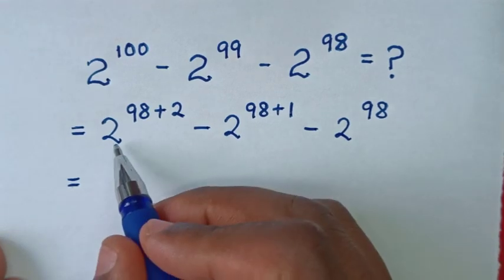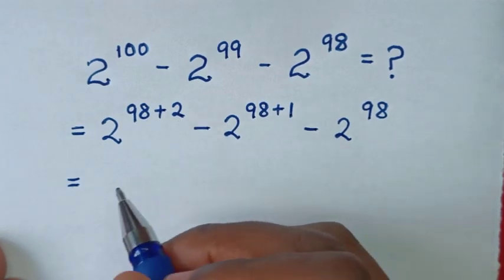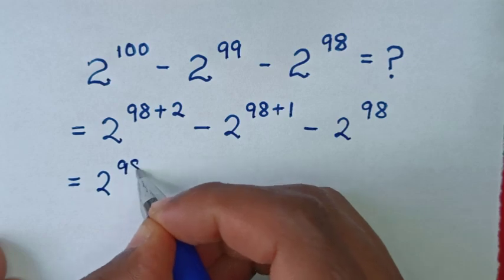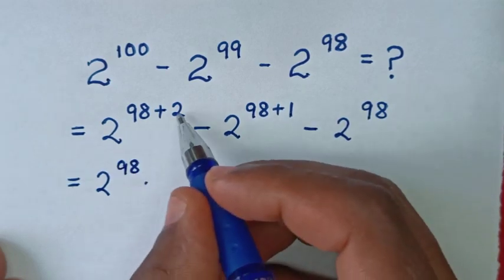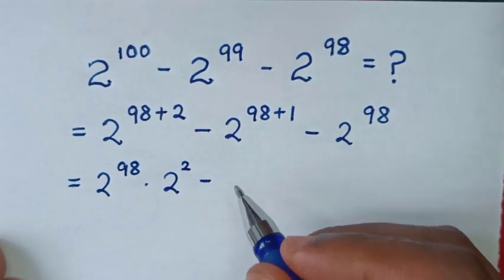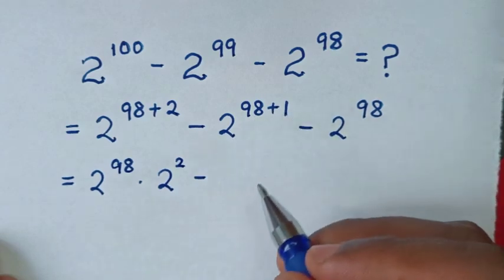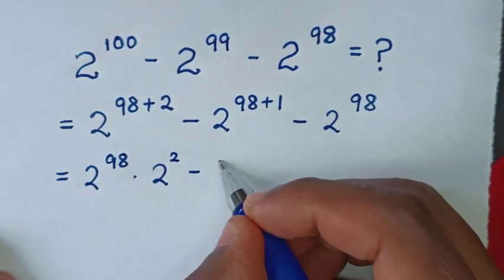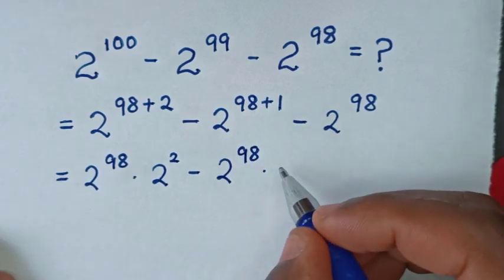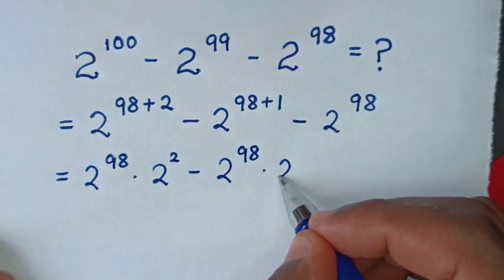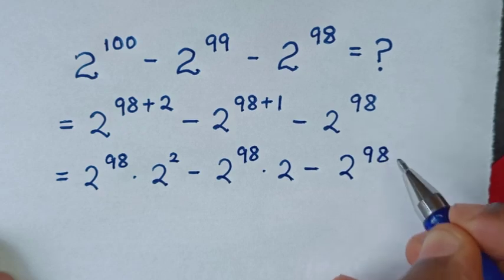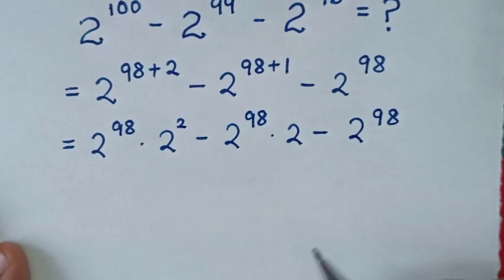So 2 power of 98 plus 2 is the same as 2 power of 98 times 2 power of 2. Then minus 2 power of 98 plus 1, which is the same as 2 power of 98 times 2 power of 1, which is 2. Then minus 2 power of 98.